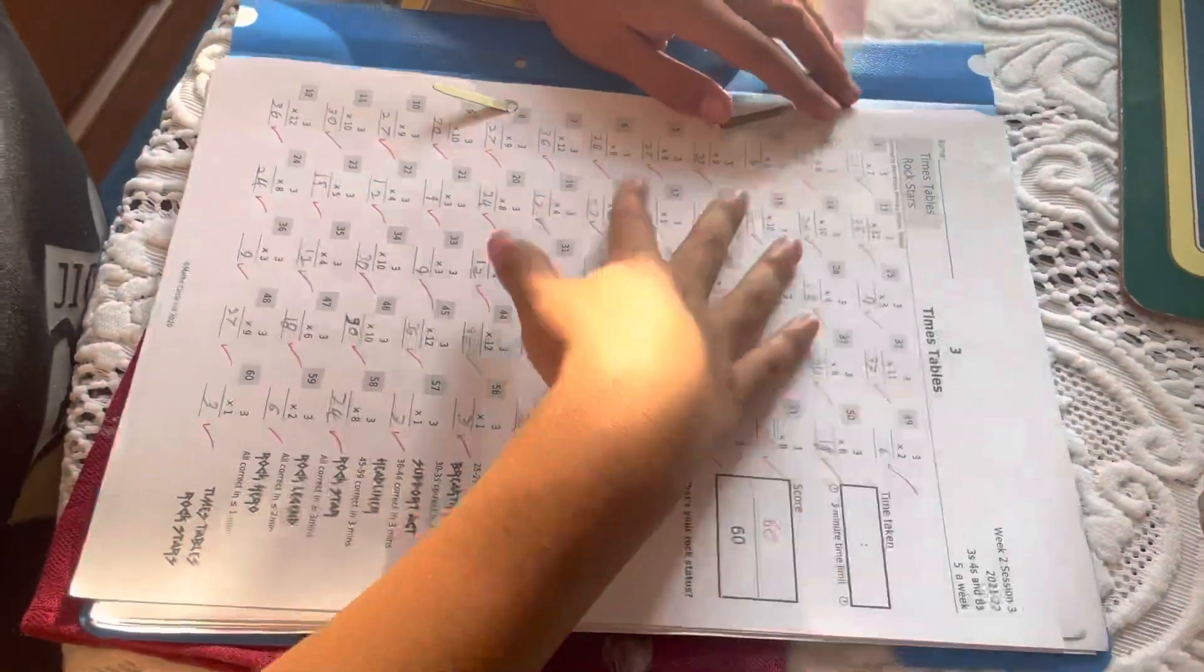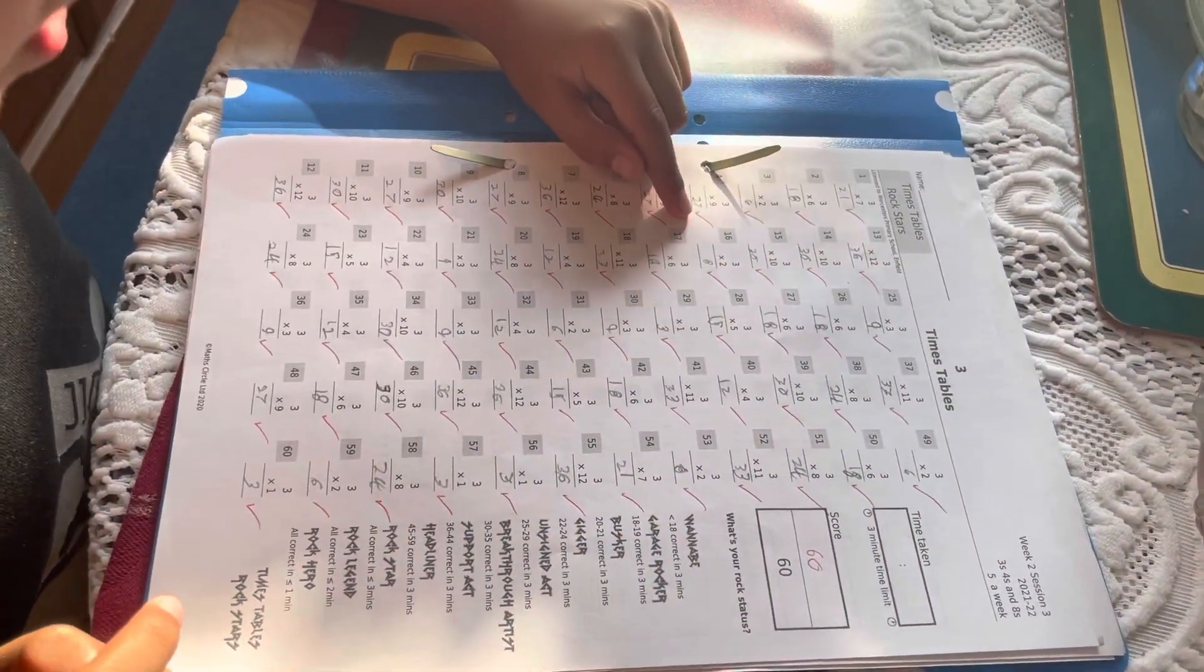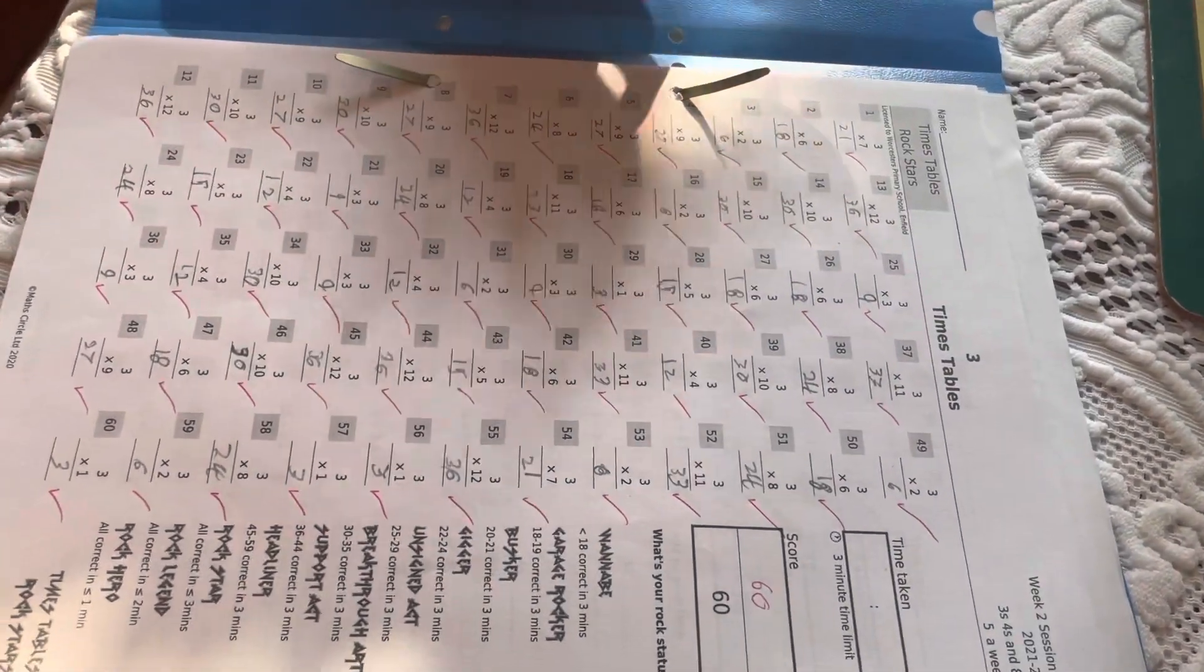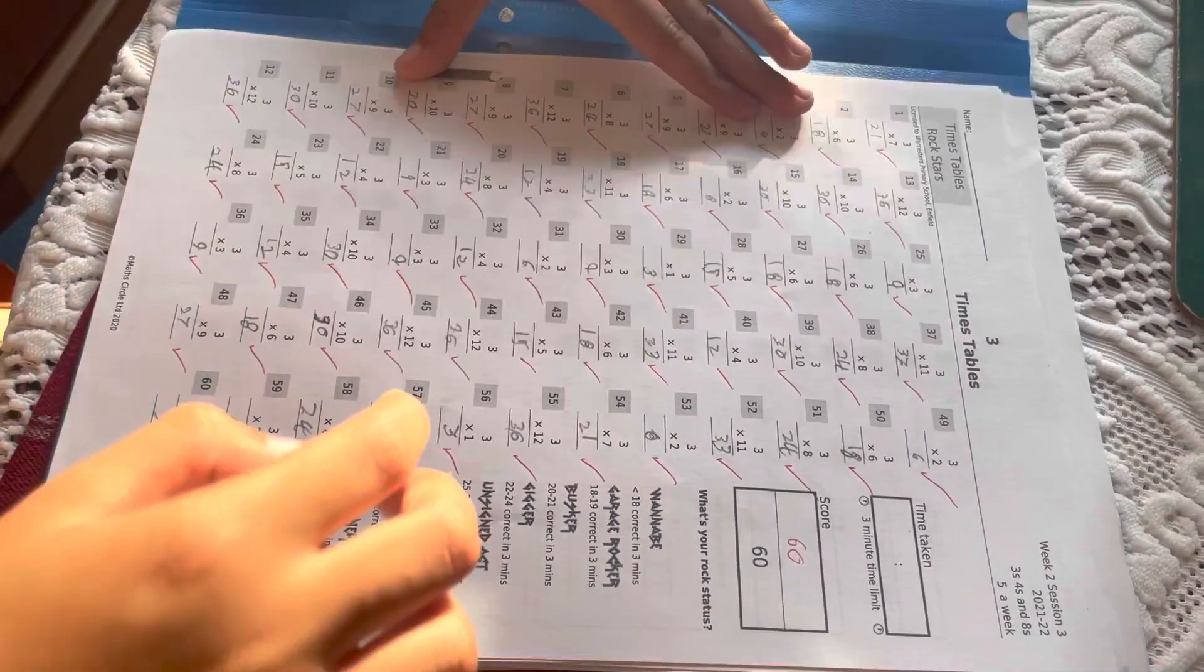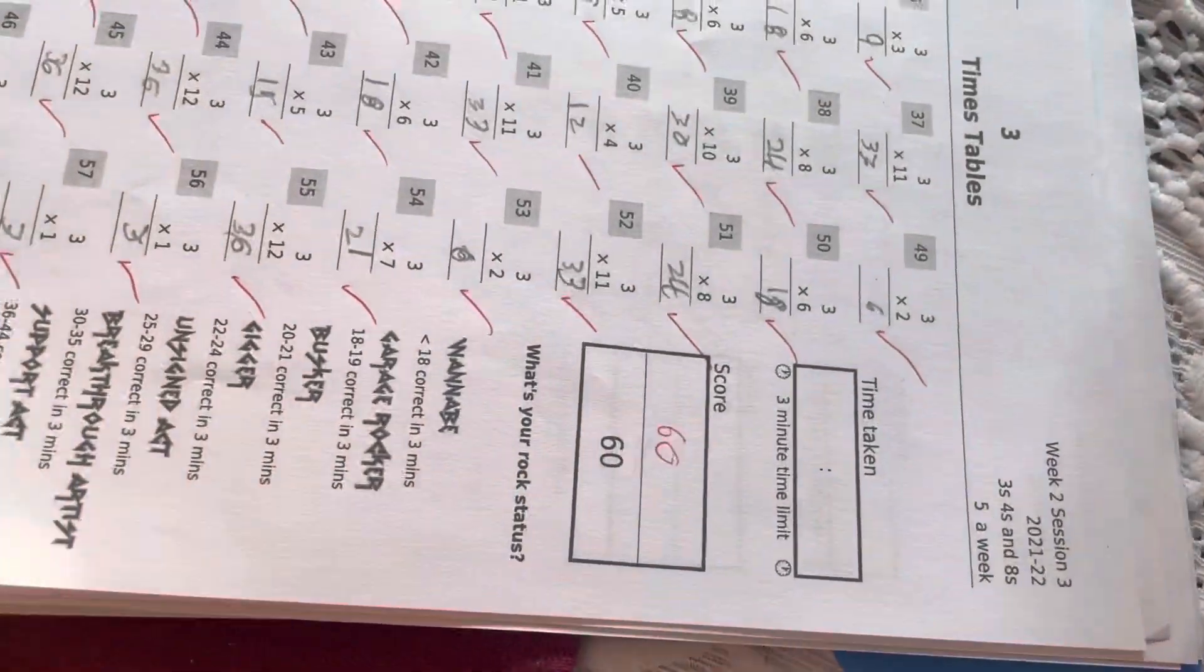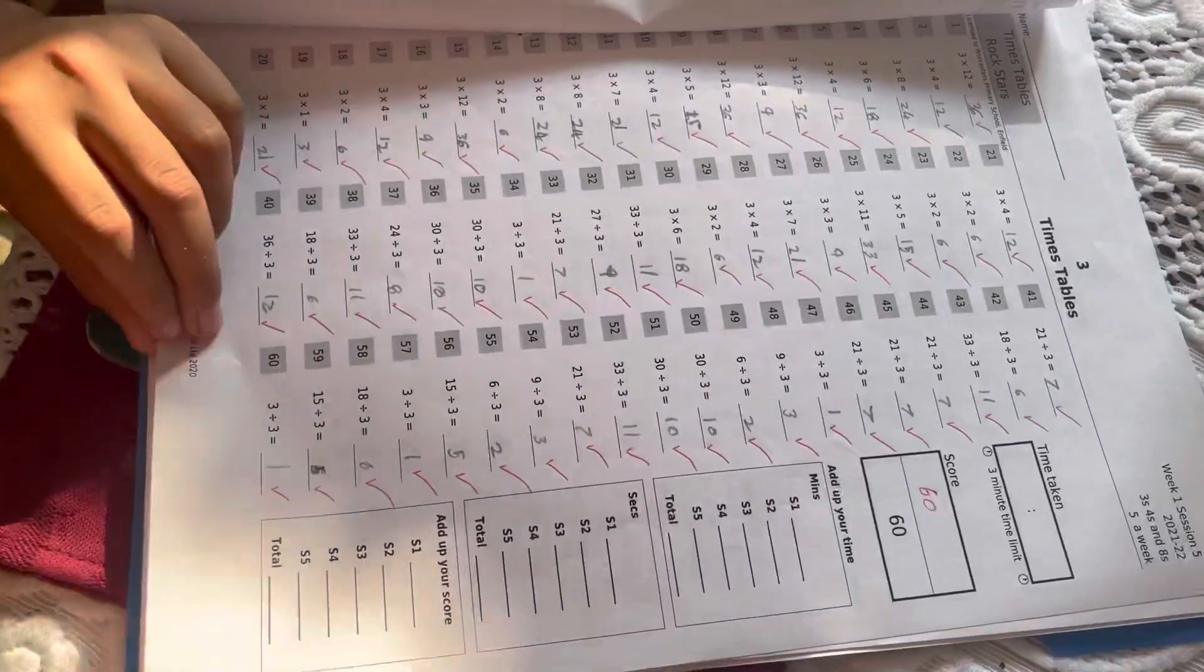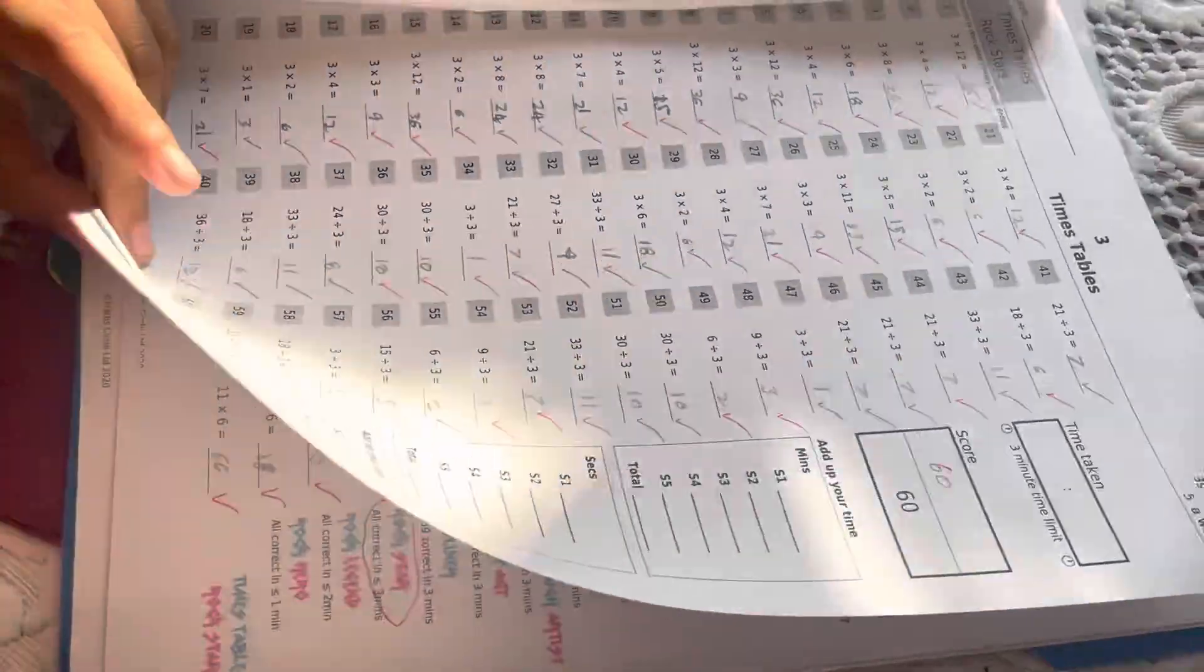So today we just did this, we just done three times tables. So three times seven, like all this easy maths. And I got 60. I got 60, yes. Show to them. Your 60 score, yeah. And then we did this three times tables again, 60 out of 60. Oh. Easily. You like maths? Yeah.